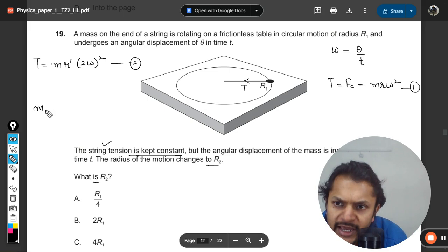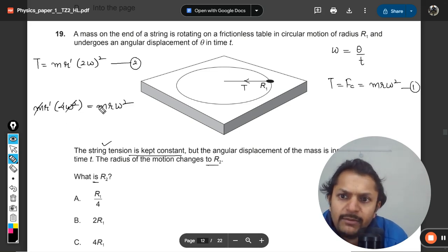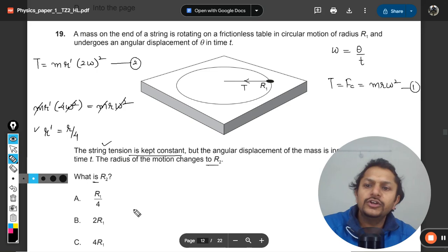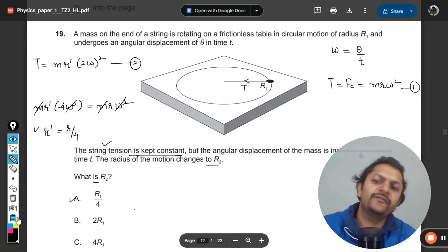I can show you here: mr dash 4 omega square is equal to m r omega square. So m and omega square are cancelled. It means that r dash is equal to r divided by 4, so r divided by 4, it is r 1 by 4.